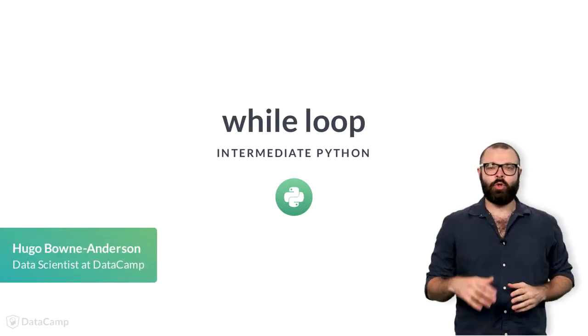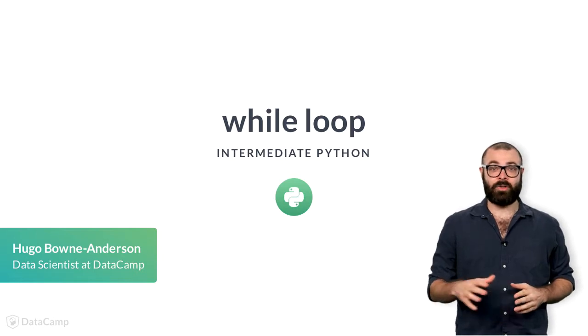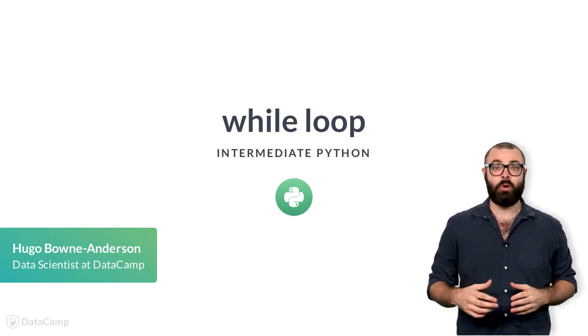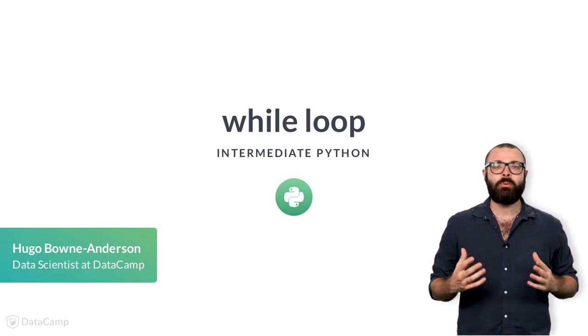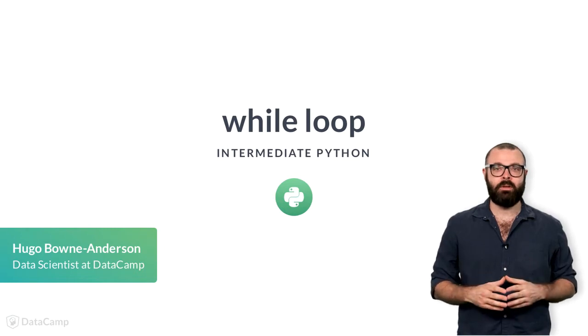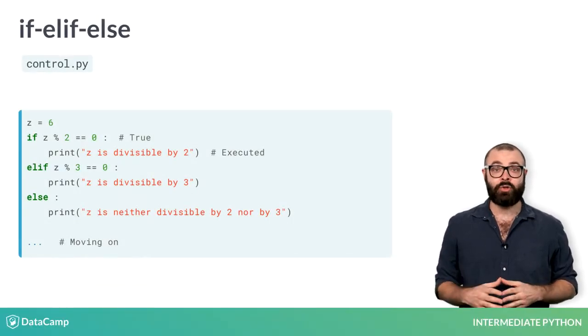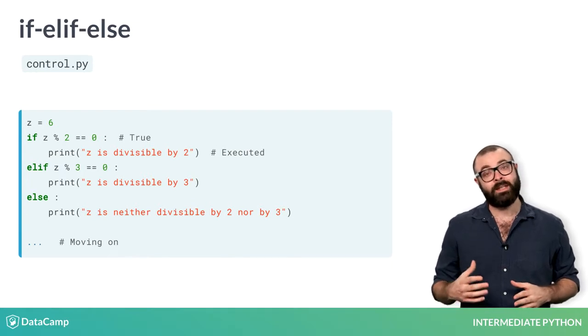In the previous chapter, you discovered the if, elif, else construct, a way to alter the flow of your scripts. As soon as Python encounters an if statement, it checks the condition. When this condition is true, the corresponding code is executed.